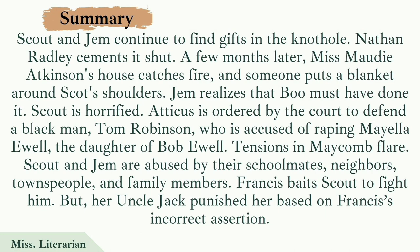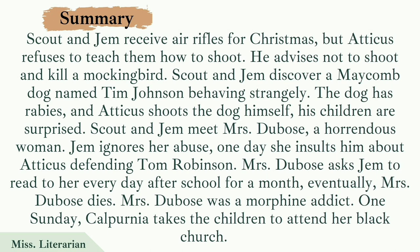Scout's uncle Jack scolds her for hurting Francis and tells her she is wrong, but Scout pleads with him to listen to the justice from her side. That Christmas, the children receive a rifle. Atticus refuses to teach them how to shoot, and his humble advice is not to kill a mockingbird, as doing so is a sin. Later that winter, Scout and Jem take the rifle to hunt rabbits. They find a Maycomb dog named Tim Johnson behaving strangely. Their cook Calpurnia recognises that the dog has rabies and alerts the neighbours and calls the policeman Mr. Tate. Mr. Tate asks Atticus to shoot the dog, and the children are surprised to discover their father knows how to shoot.